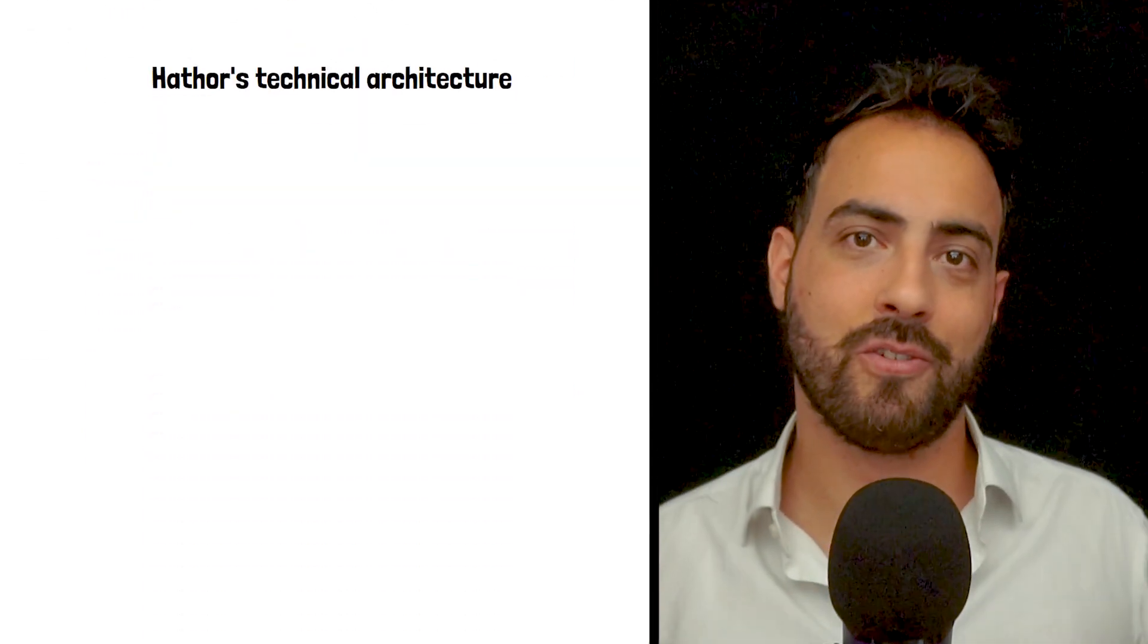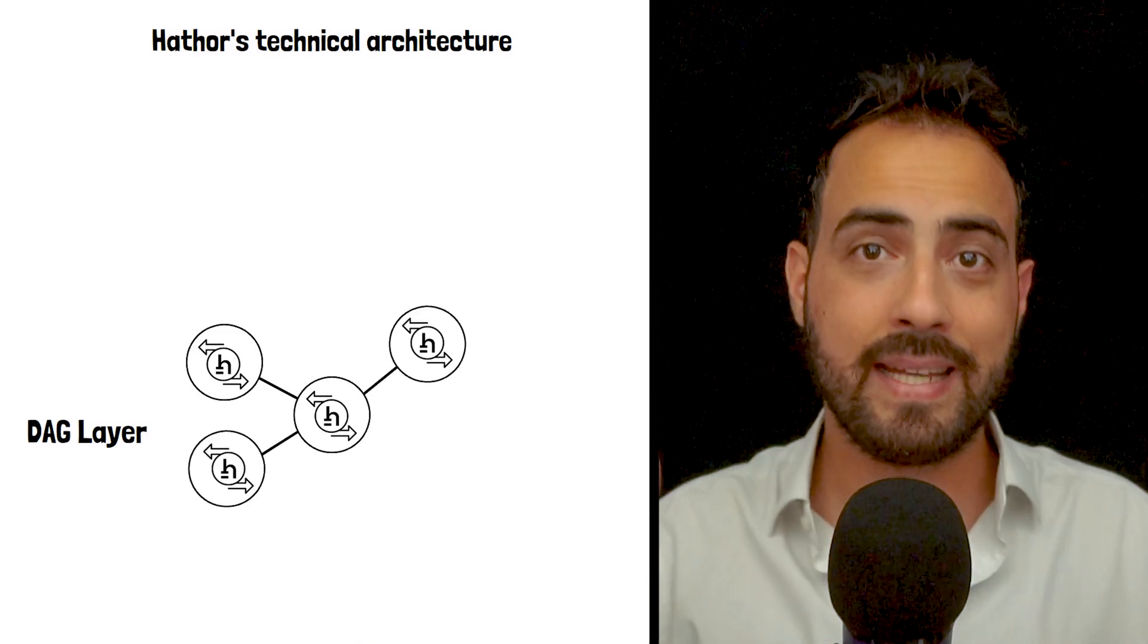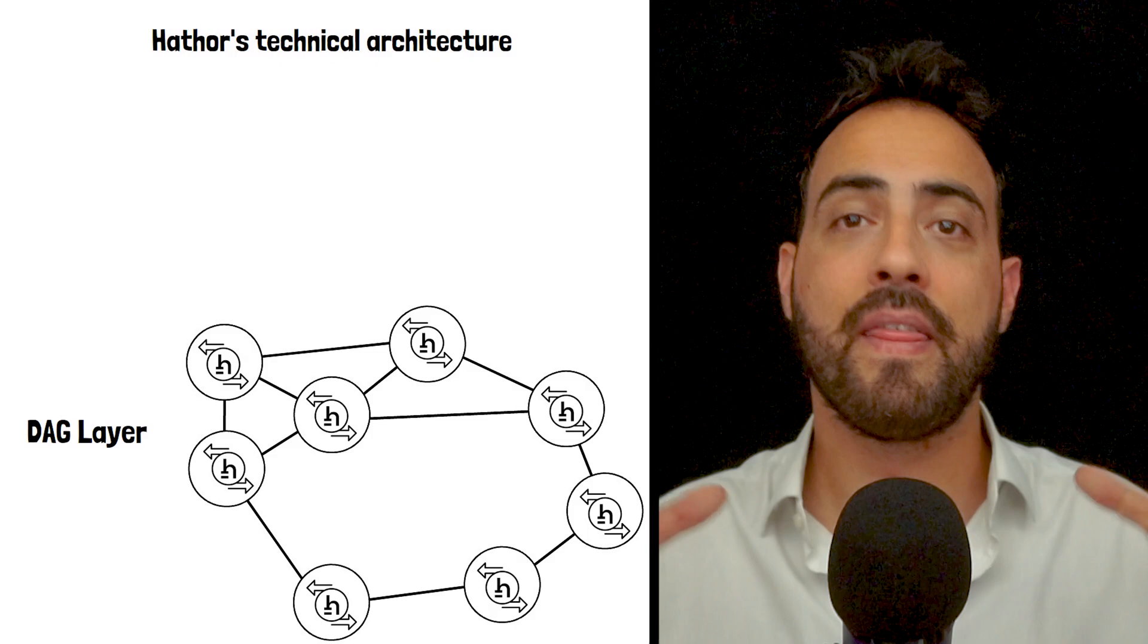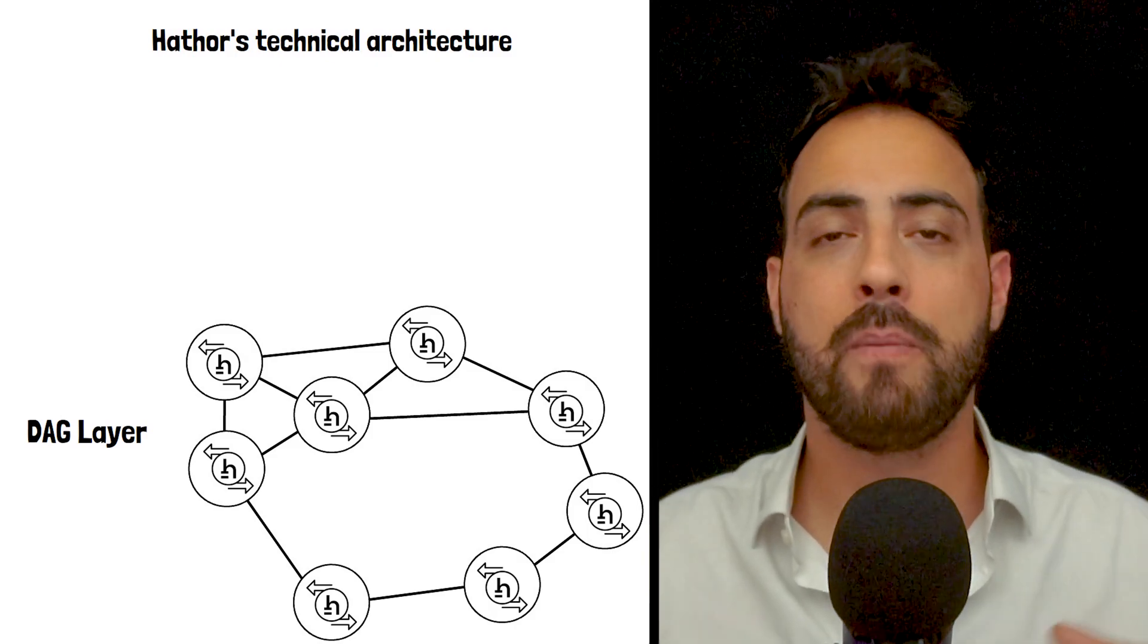As I already mentioned, the DAG layer is where most transactions live. Each transaction in the DAG confirms at least two previous transactions. This creates a web-like structure that allows for parallel processing.